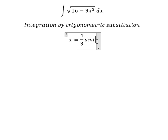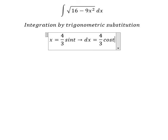So we do the first derivative for both sides, so we have 4 over 3 cosine t dt.